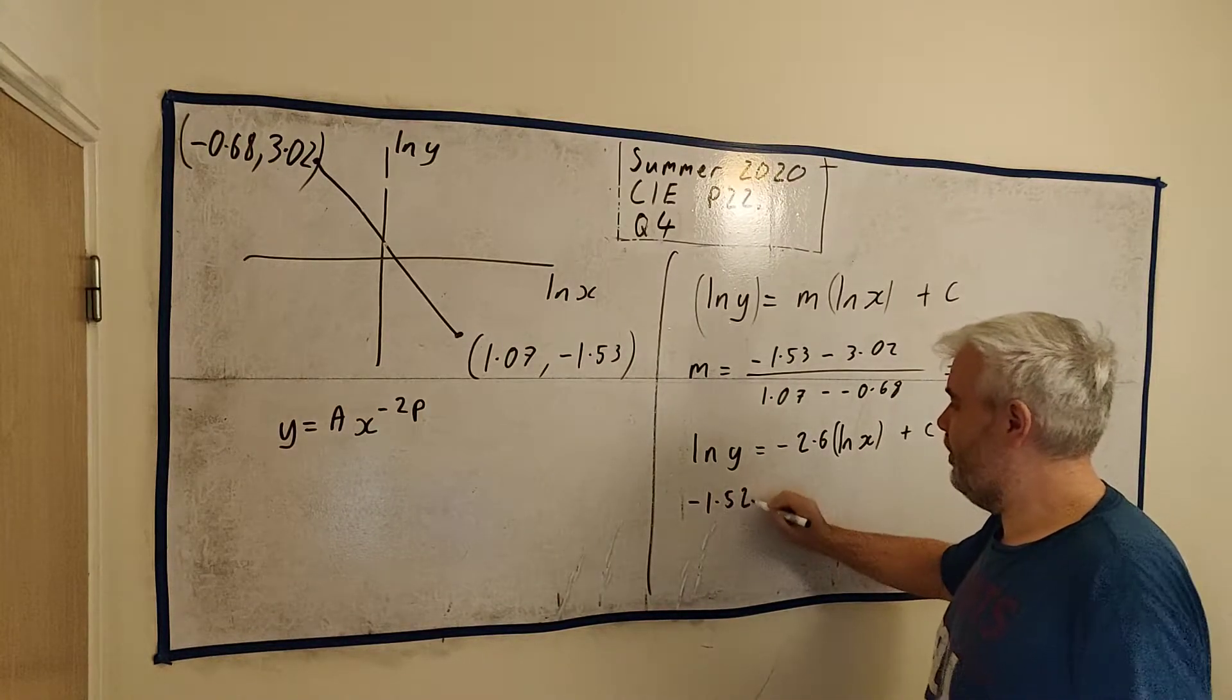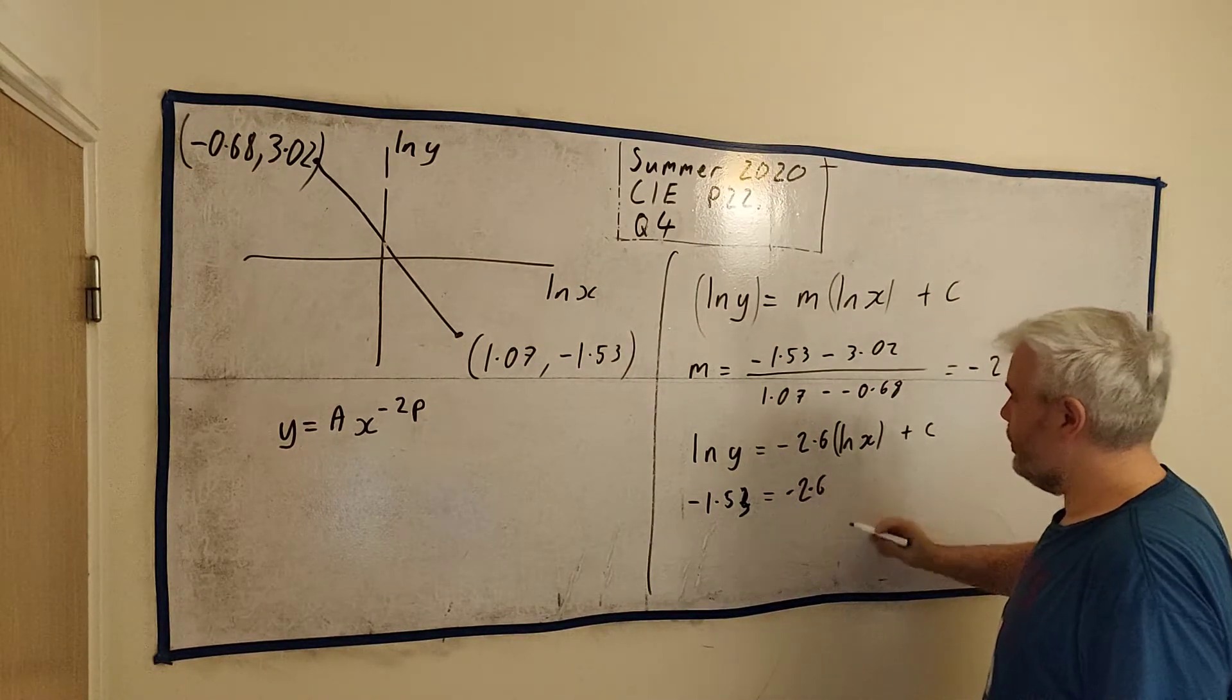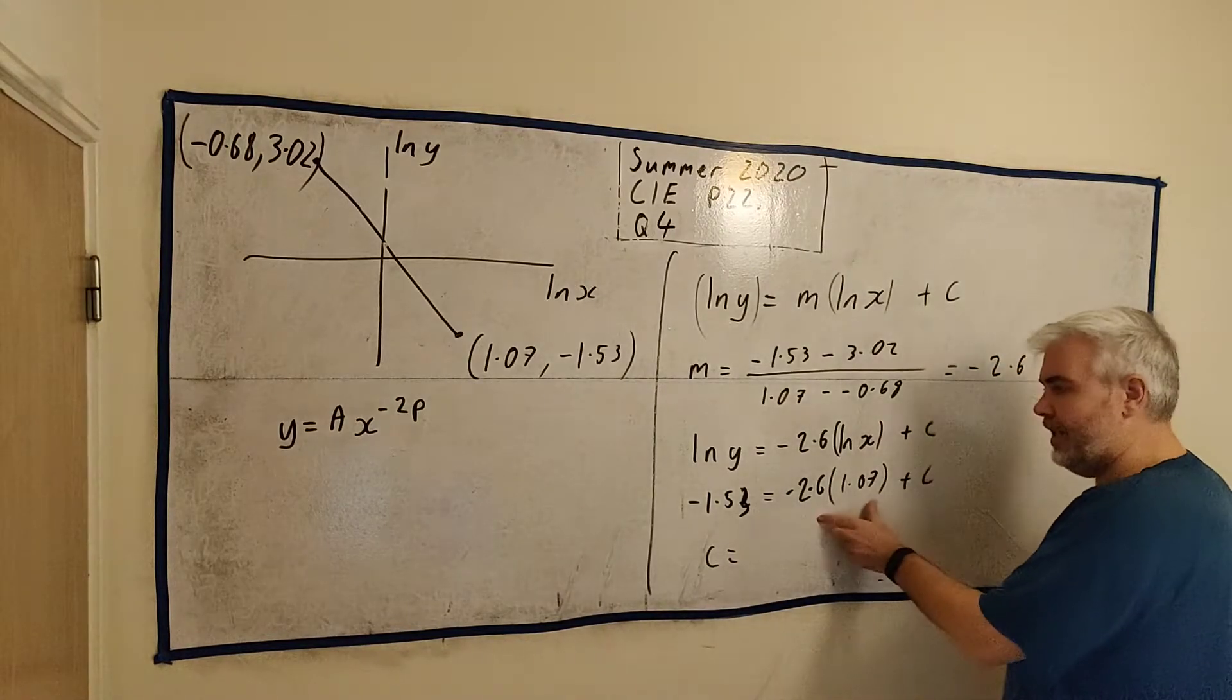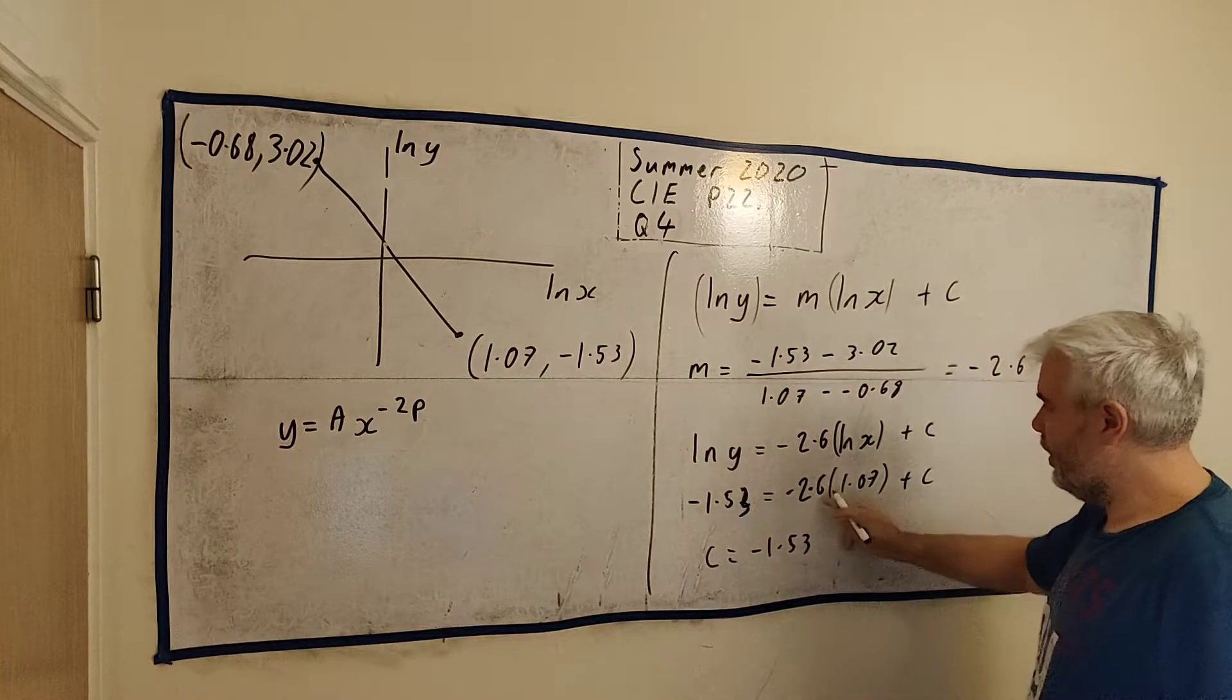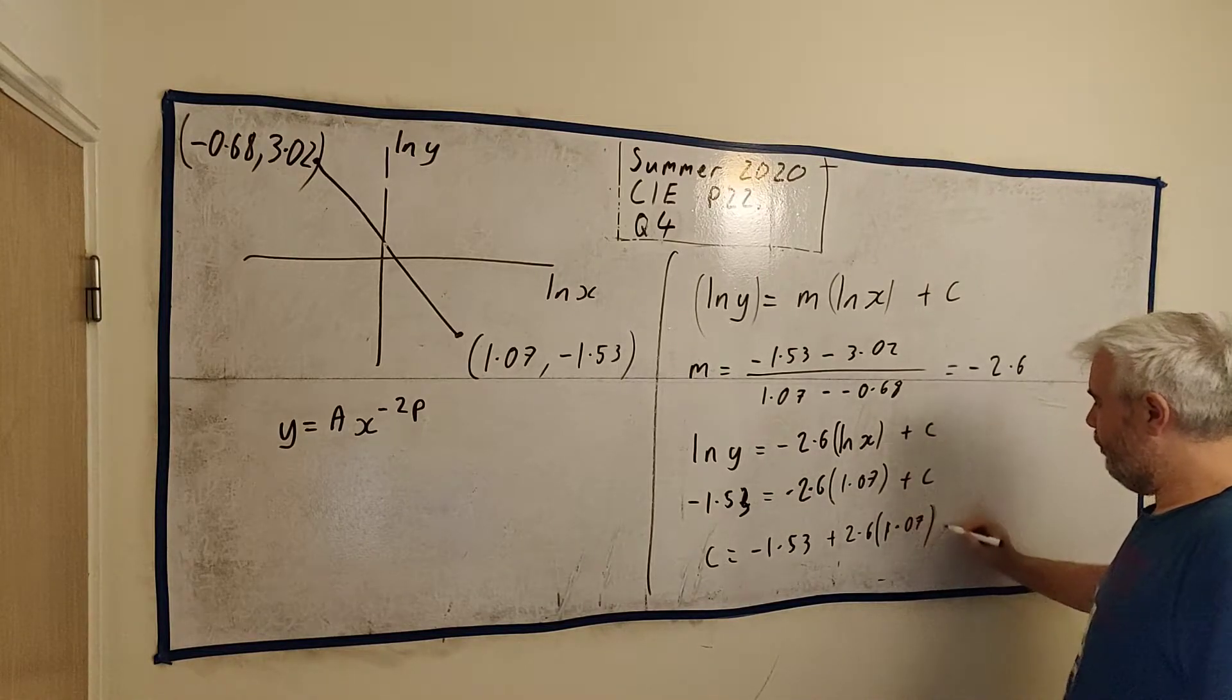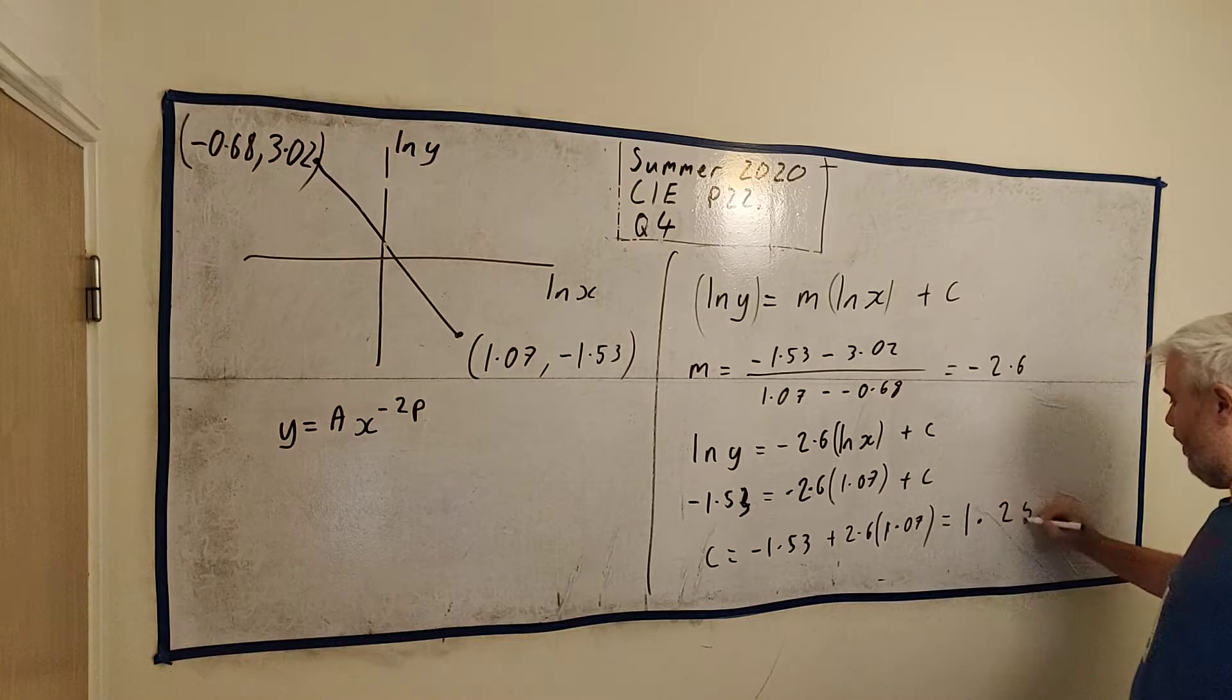But we know what natural log of x and natural log of y is. Pick either of these points. I'll pick this one because it's closer for me to reach. And if we put these in, we'll get minus 1.53. 3, sorry. That goes in here. Is equal to minus 2.6 multiplied by 1.07 plus c. Just rearrange this. We'll get c on its own is equal to minus 1.53. This will become a plus. Plus 2.6 multiplied by 1.07.